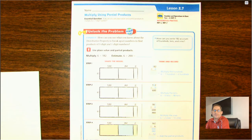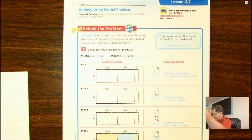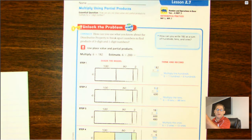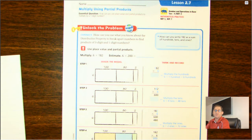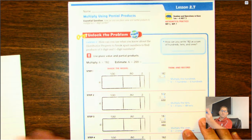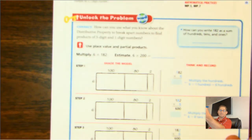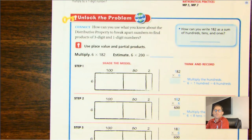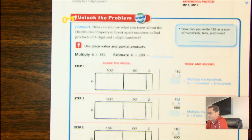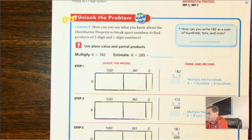All right, hello. Today's lesson 2.7 on page 71 of your fourth grade textbook. Our topic is multiplying using partial products. Our unlock the problem question today: how can you use what you know about the distributive property to break apart numbers to find products of three-digit and one-digit numbers?